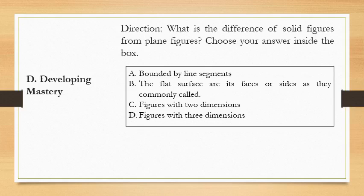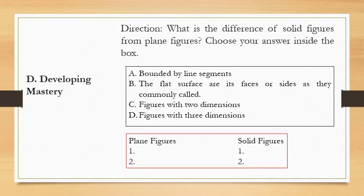For letter A, bounded by line segments. B, the flat surface are its faces or size as they commonly called. Letter C, figures with two dimensions. For letter D, figures with three dimensions. So, the students will write their answer under plain figures, then also under solid figures. Then they're going to choose from the choices given A, B, C, and D.